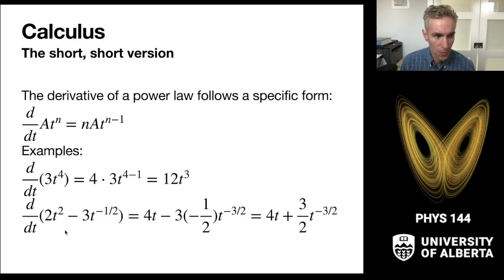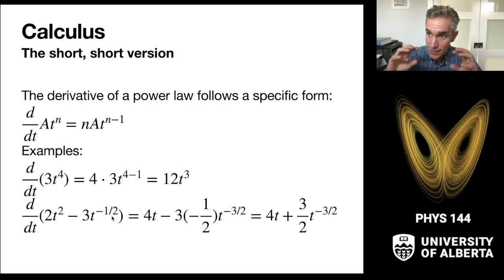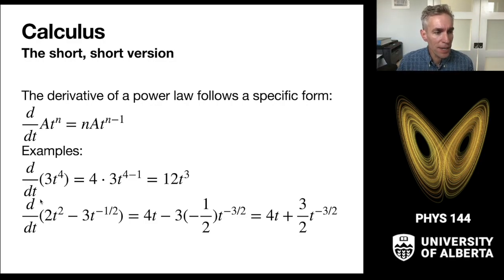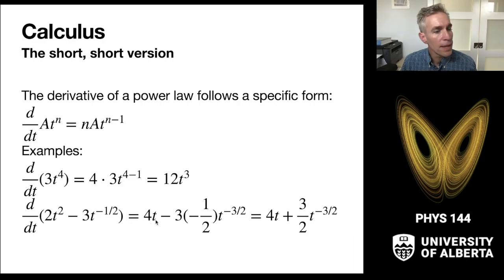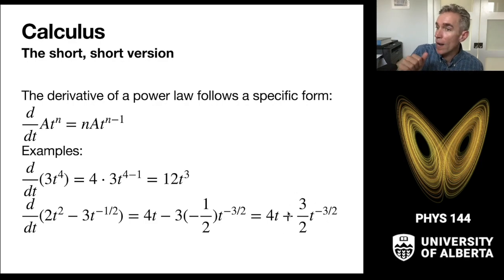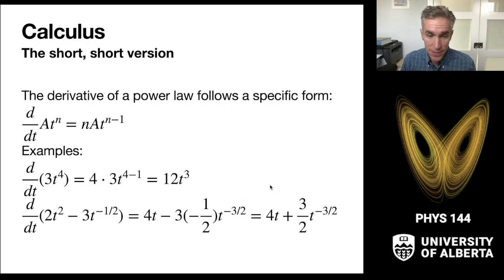Applying the power rule to a compound expression: d/dt of (2t² − 3t^(−1/2)) — we apply the derivative to each term separately. The derivative of 2t² gives 4t. For −3t^(−1/2), we pull down the −1/2 power: (−1/2)(−3) = +3/2, and we subtract one from the exponent, giving t^(−3/2). So the result is 4t + (3/2)t^(−3/2).